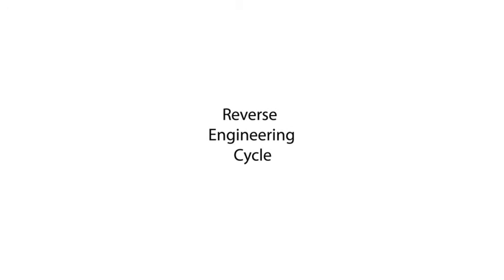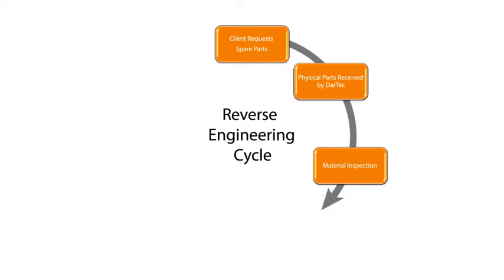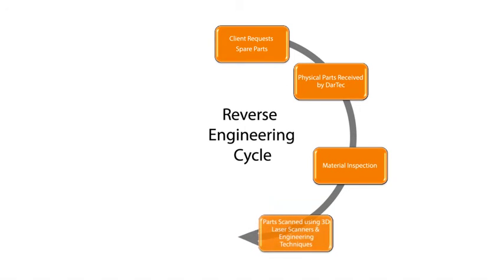Darteq uses a defined process to conduct reverse engineering with its clients. The first step is to meet with the client and assess the part. The second is to physically inspect the part and confirm it's viable for reverse engineering. Then a metallurgy inspection is conducted to determine the material composition and grade, as well as any post-manufacturing processes.